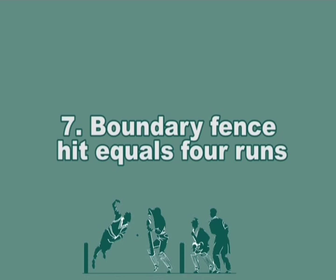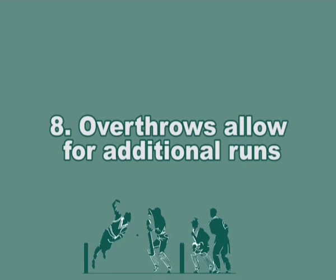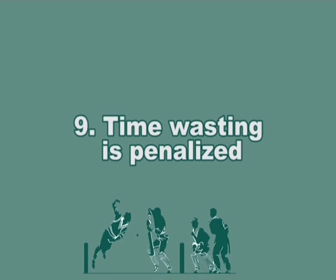Seven: Boundary fence hits equals four runs. Cricket recognizes that a batsman's ability to hit the fence with a bowled ball should be considered equal to four runs. If the ball goes beyond the boundary fence, the batsman scores six runs. Eight: Overthrows allow for additional runs. Should fielders neglect to throw the ball back, the batsman will continue taking runs. If the ball rolls to the boundary of the field, the runs already completed are added to the automatic four-run score a boundary hit earns. Nine: Time wasting is penalized. A new batsman is out of the game if he takes longer than two minutes to take the field after a wicket falls.